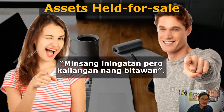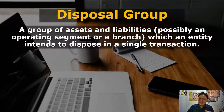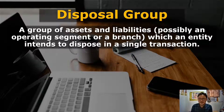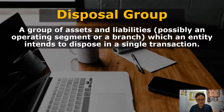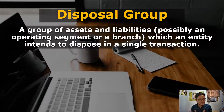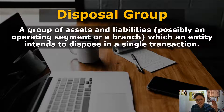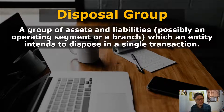Next is a disposal group. A disposal group is also held for sale, but it is a group of assets and liabilities — possibly an operating segment or a branch — which an entity intends to dispose of in a single transaction. So asset held for sale and disposal group are similar, except that a disposal group is a whole branch or operating segment. For example, if you have a branch in a separate geographic location and you're no longer doing well there, you may decide to discontinue operations there, and that particular branch may be classified as a disposal group covered by IFRS 5.